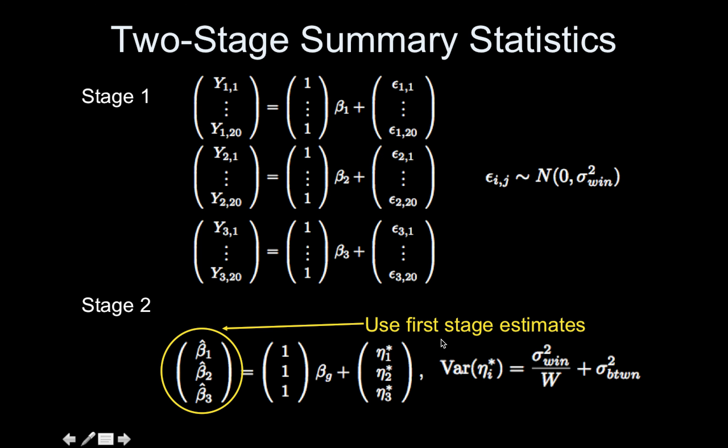Stage two, what we're doing is we're replacing the betas with beta hats. If you ever replace something that didn't have a hat with something that does have a hat, in other words, you're assuming something that you previously assumed was known, now you're putting an estimate in place of it. You have to be careful. You can't just carry on. You have to incorporate the variance of your estimates in some way. So that's why over here my etas have stars on them.